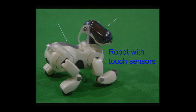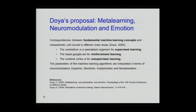The third example is more of a bottom-up approach — the first two I would call top-down approaches of implementing emotions. This is Conditt's proposal on metabotropic neuromotivation and emotion. He summarizes a wide range of neuroscience results supporting correspondences between fundamental machine learning concepts and characteristic cell circuits in different brain areas. The cerebellum is a specialized organism for supervised learning, the basal ganglia for reinforcement learning, and the cerebral cortex for unsupervised learning. He also provides explanations for parameters of these algorithms in terms of neurotransmitter functionality — dopamine, serotonin, acetylcholine, noradrenaline.